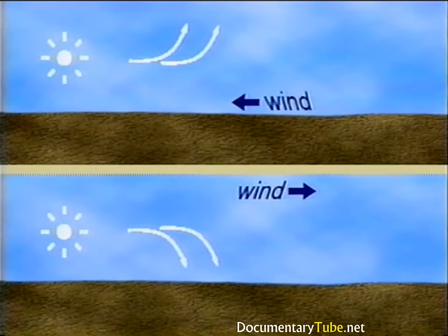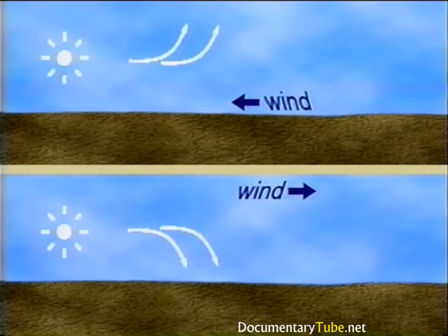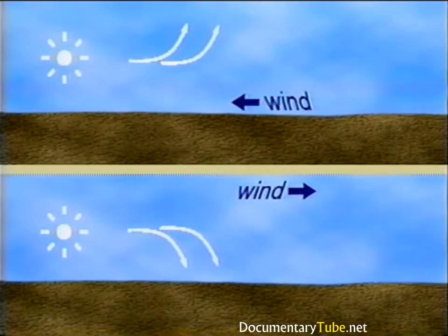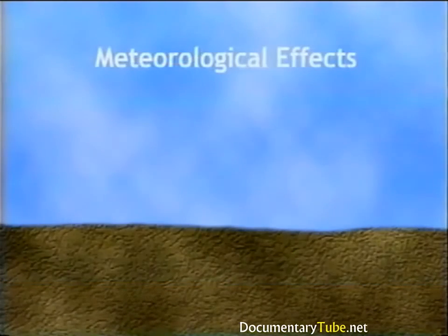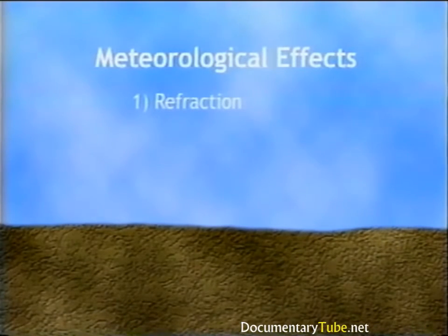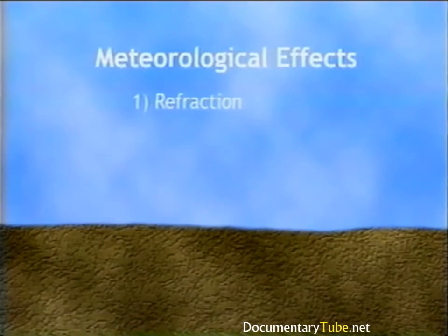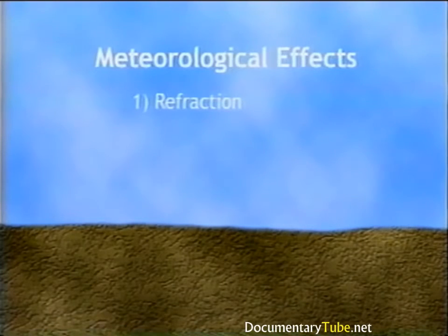Wind also causes sound to deviate from a straight path. When sound propagates upwind, ray paths curve upward, decreasing the received noise level. When propagating downwind, ray paths curve downward, increasing it. Sound reaches the receiver with greater intensity when refracted downward and with less when refracted upward. While atmospheric conditions can have major effects over distances greater than 100 meters (300 feet), typical highway studies are performed within 100 meters of the highway, where meteorological effects are less severe.